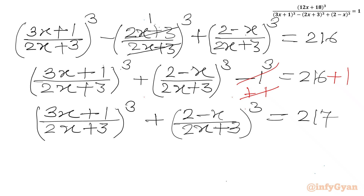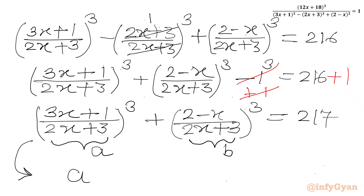Now I will use substitutions. Let's say the first bracket A = (3x+1)/(2x+3) and the second bracket B = (2-x)/(2x+3). So the equation after substitution will be: A cube plus B cube equal to 217.